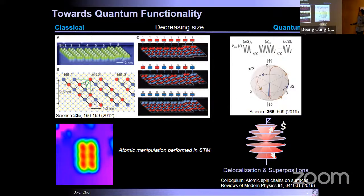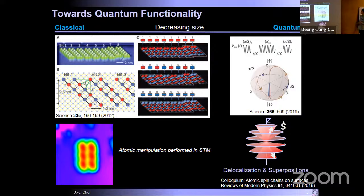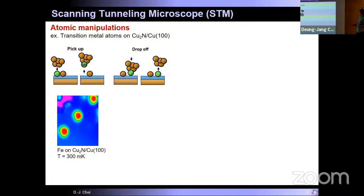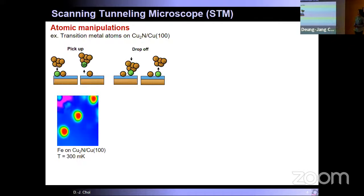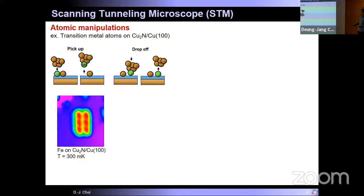Using the atomic manipulation capability in the scanning tunneling microscope, we can cover from the classical limit up to the quantum limit. Previously, it was shown that using atomic manipulation in STM, one can build atomic arrays which have binary states as classical bits. Now we can use qubits — using the spin-1/2 quantum state as a qubit, we can do quantum operations controlled by electron spin resonance STM. We can build structures like two-by-three iron atomic arrays on copper nitride surface using vertical atomic manipulation.